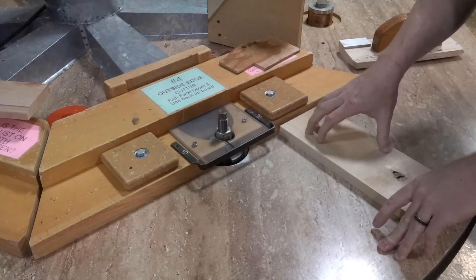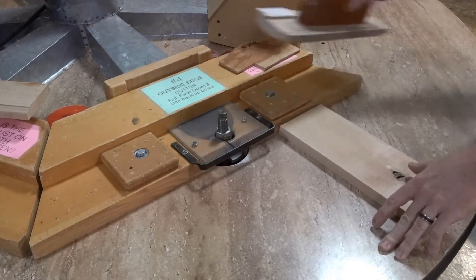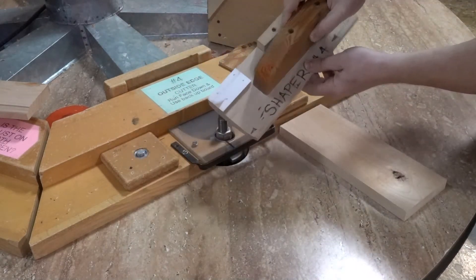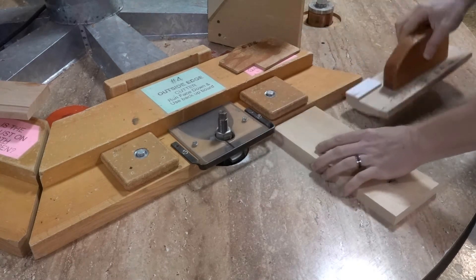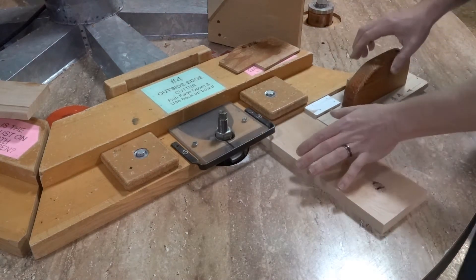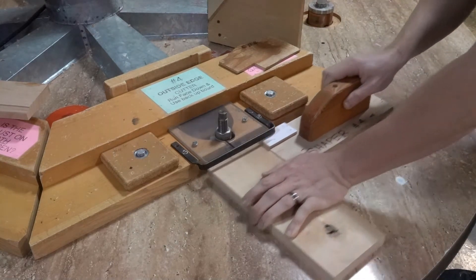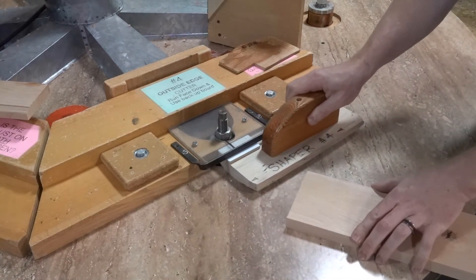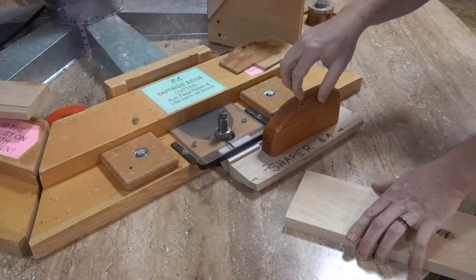We always cut end grain first, and whenever we do end grain, we have to use a backing board so we minimize the tear out. The backing board goes behind. Remember to keep these tight together all the way through. So this has a stop on it, so you can't continue all the way through with the backing board. Keep them tight.